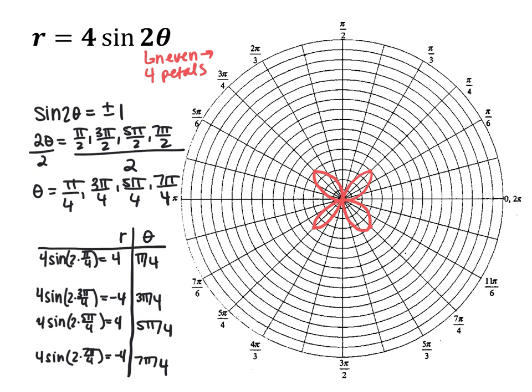In this section, we talked about polar graphs and polar equations, using r-theta tables to help us graph these special polar graphs — especially limaçons, cardioids, and roses.